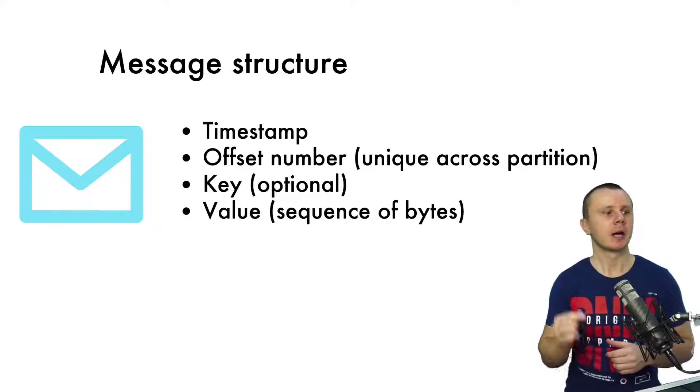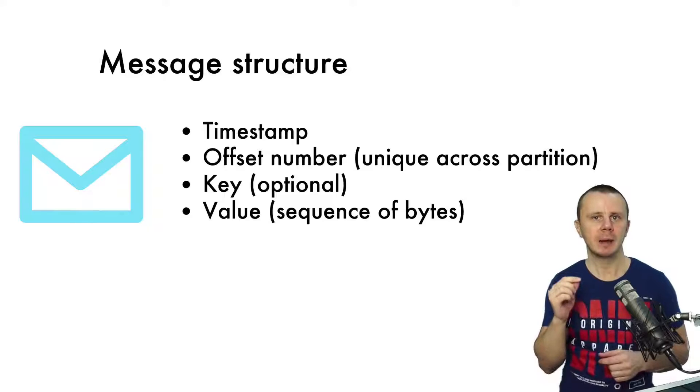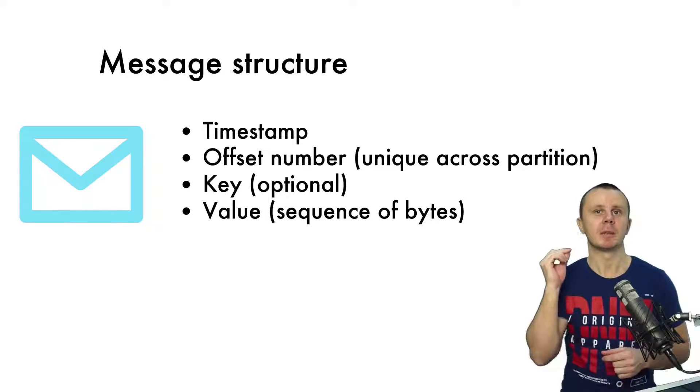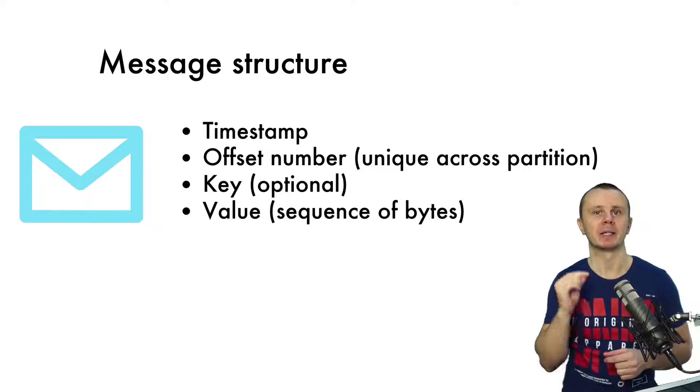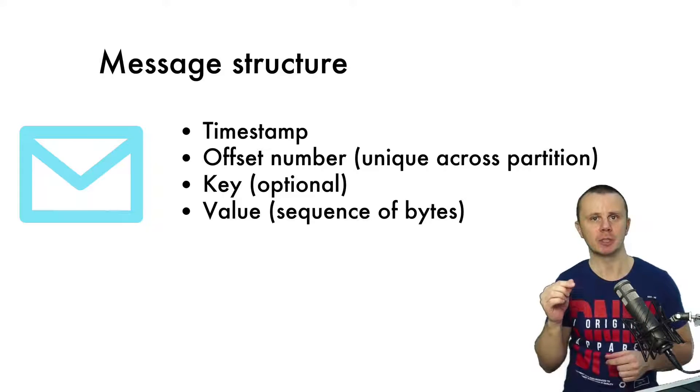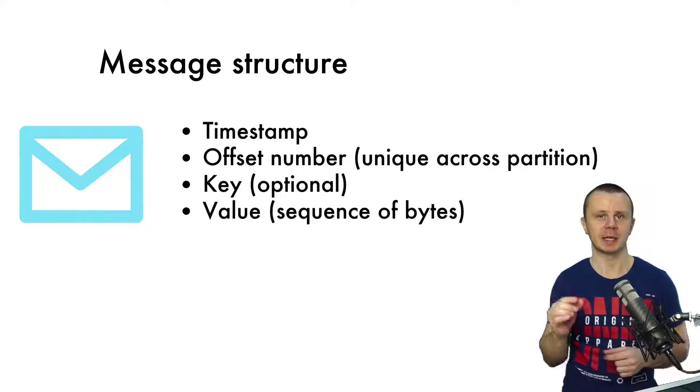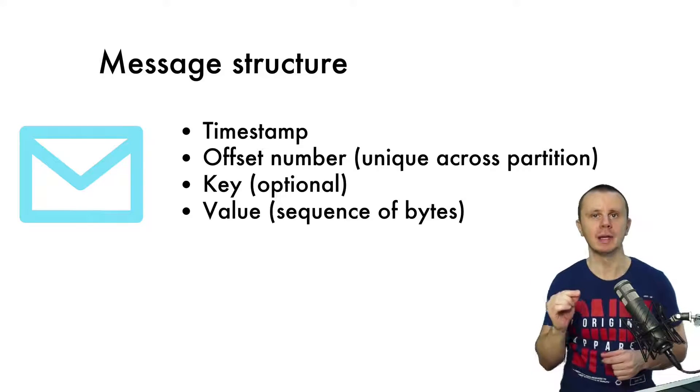Every message has an offset number. To recap, in the previous lecture I didn't tell you that this number must be unique across the topic. That's because it must be unique only across the partition. We will get back to partitions pretty soon in one of the next lectures, but for now just remember that the offset number is unique only across the partition in a specific topic.